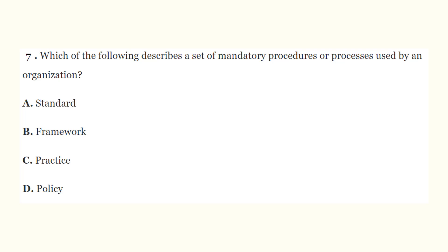Question number seven: which of the following describes a set of mandatory procedures or processes used by an organization? A) a standard, B) framework, C) practice, D) policy. The correct answer is A, a standard. A standard is a set of mandatory procedures or processes used by an organization. For example, if the policy of an organization says that all employees' laptops must be equipped with Windows 10, that is a standard — it's mandatory.